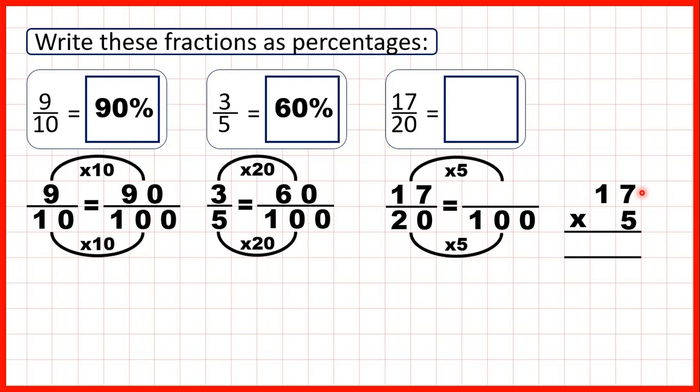We can use short multiplication for this. So seven times five is thirty-five, so three five. One times five is five, plus three is eight. So seventeen-twentieths is equivalent to eighty-five hundredths, which means it's the same as eighty-five percent.